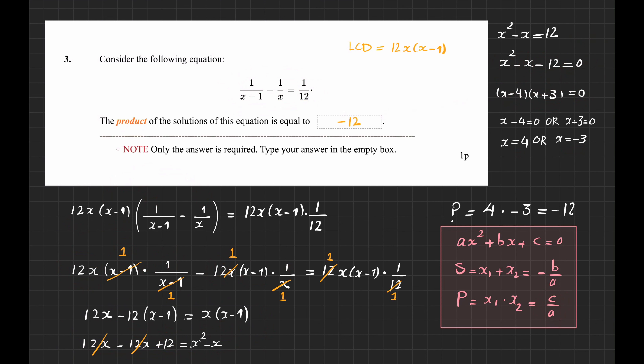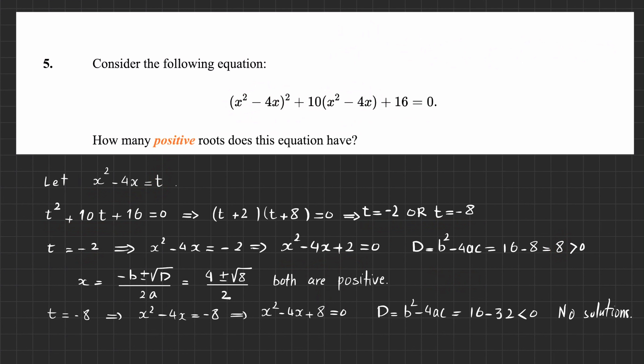For the other case, t equals minus 8: x squared minus 4x plus 8 equals 0. The discriminant is 16 minus 32, which is negative, so no real solutions. In total, we get two positive roots from the first case and none from the second. So the answer is two positive roots.